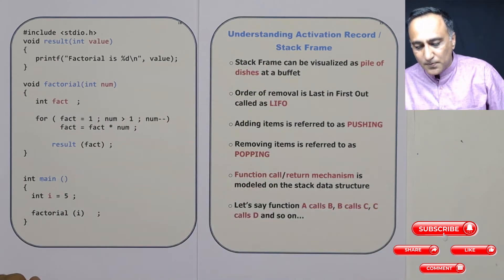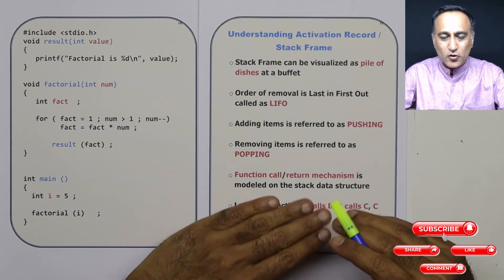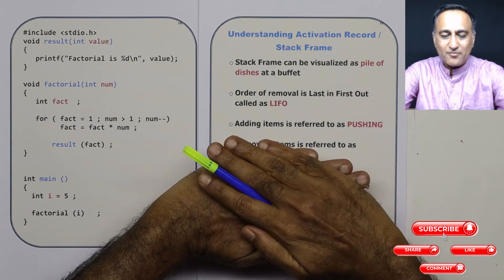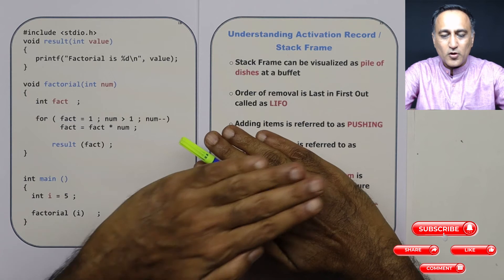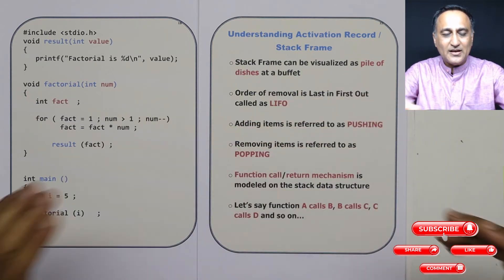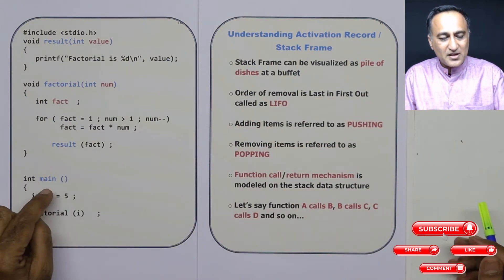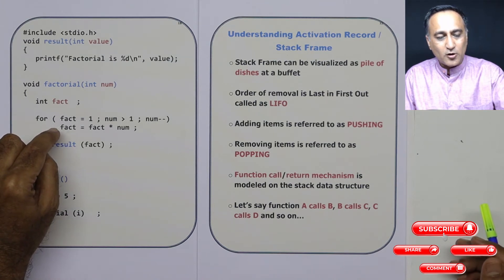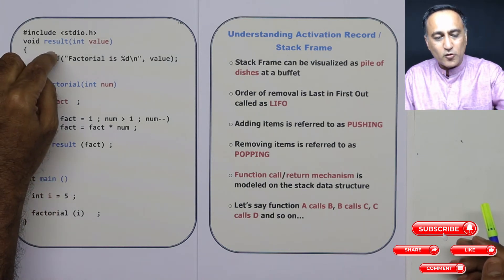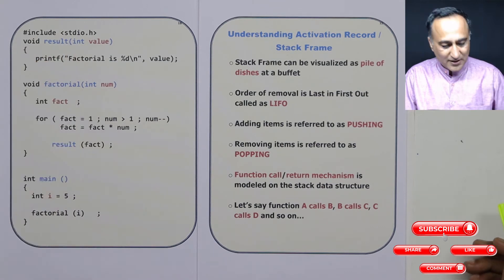Let's say A calls B, B calls C, C calls D. A is going to be at the bottom, then B, then C, then D. So the first item called — main — is at the bottom; on top of main is factorial; on top of factorial is the activation record of result.